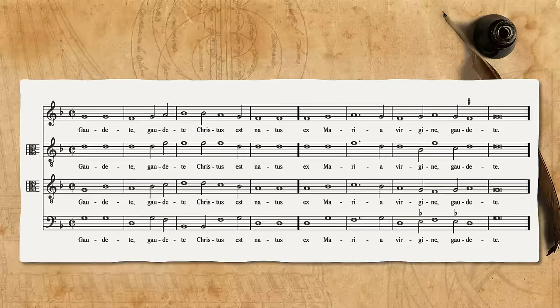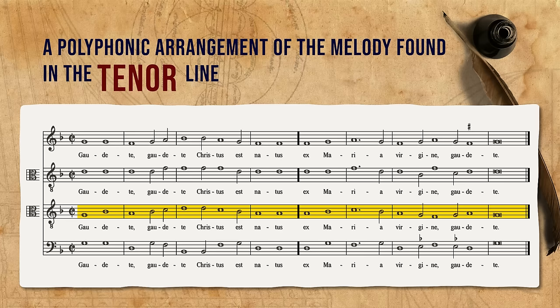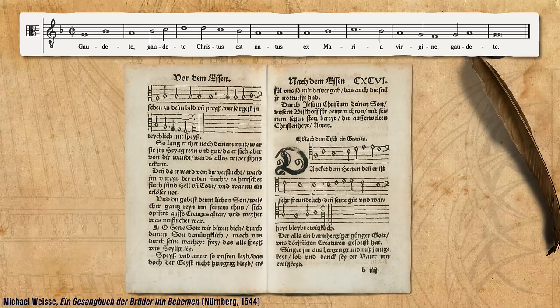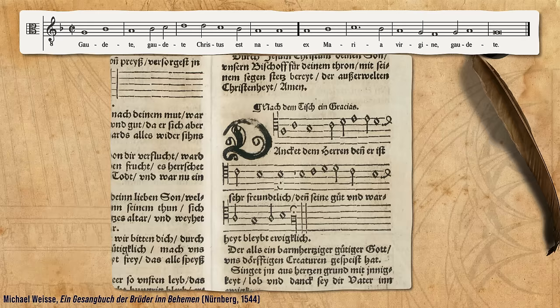This seems to be a polyphonic arrangement of the melody found in the tenor line. Apart from the fact that it was a common procedure to base polyphonic texture on a melody in the tenor, we can also find this melody on its own in some earlier sources. Here it is set as a hymn with a German text from a 1544 source, to be sung after the meal.